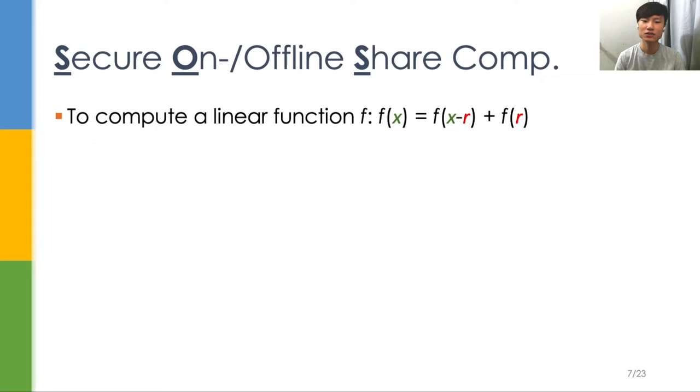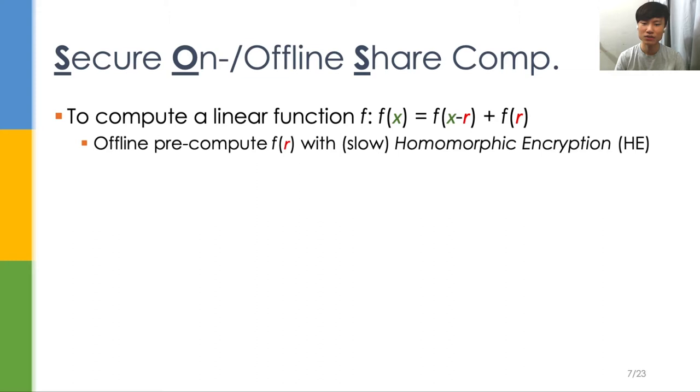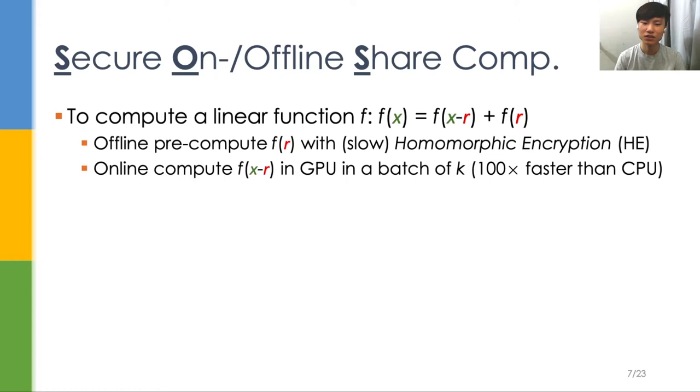Secure online and offline share computation, shown as SOS, is useful for linear operations. The key idea is that when computing a linear function f(x), we can separate it to f(x-r) and f(r). We first pre-compute f(r) using slow homomorphic encryption (HE), where r is a random value.